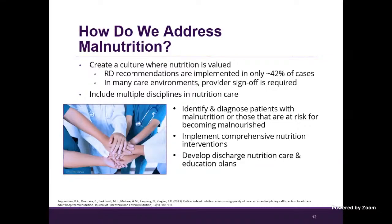Creating a culture where nutrition is valued is really significant. Not only are we identifying and diagnosing malnutrition, but we also want to identify and monitor those who are at risk, prevent them from becoming malnourished, and continue to monitor them while they're in the hospital and after they discharge. Part of addressing malnutrition is implementing comprehensive nutrition interventions — be it PO intake, enteral nutrition, or TPN — and developing a comprehensive discharge nutrition care and education plan, which may involve multiple disciplines.